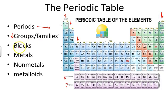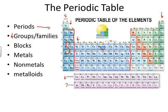We also have blocks based upon the ending electron configuration for the elements in the region. First is the S block, then the D block, which is 10 wide and sits between the S block and the next section over. Then the P block, and the F block of the periodic table.